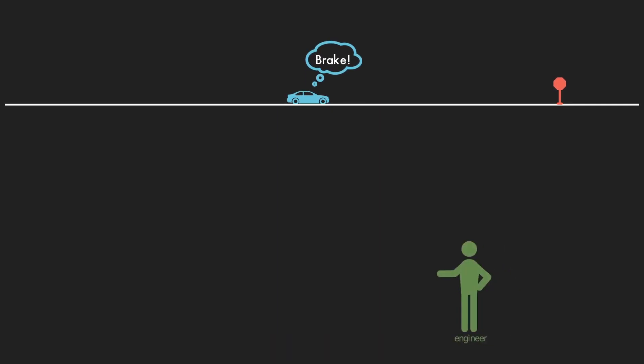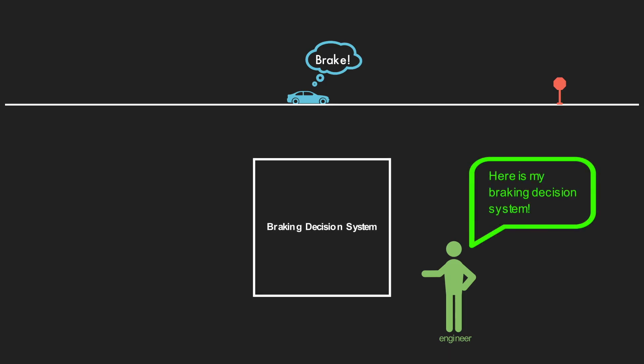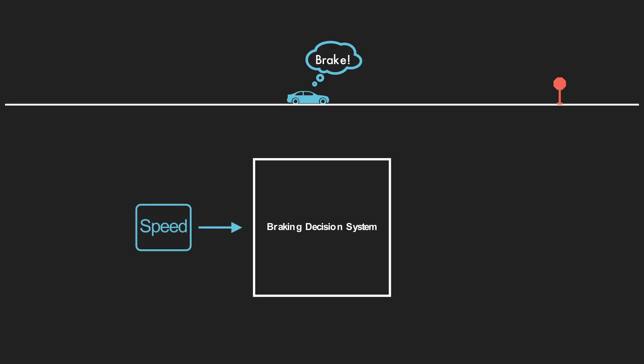In fact, we'll assume that an engineer has already approached us with a design for a braking decision system that does this. Remember, our goal is not to design a system ourselves, but instead to verify that an existing one is safe. We will talk about how this system might work in a minute, but for now, let's just think of it like a black box that takes in the speed of the vehicle when it detects the stop sign and outputs a distance D, which tells us how far the car should be from the stop sign when it starts braking.